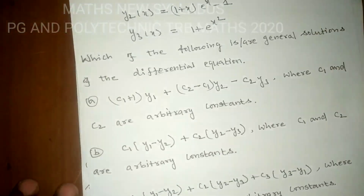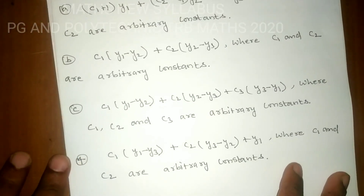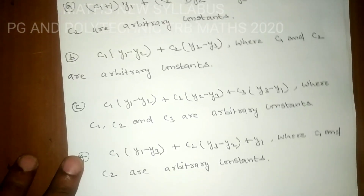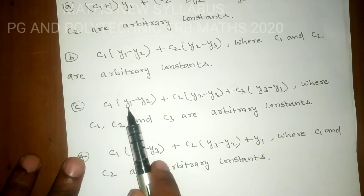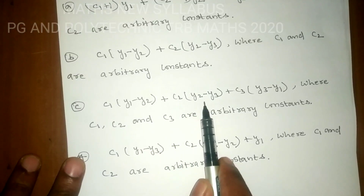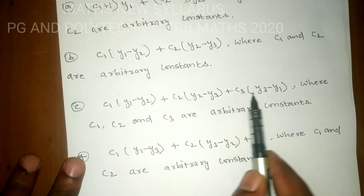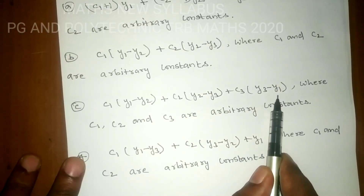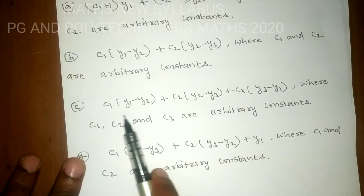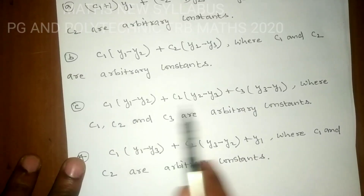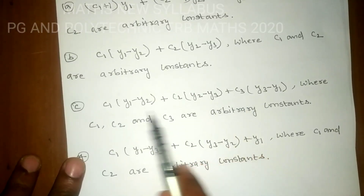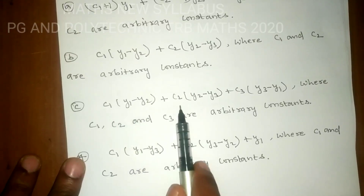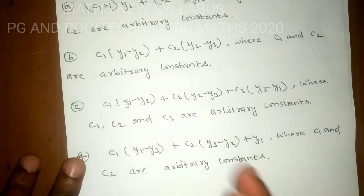Now, Option C is a linear combination: c1·(y1 − y2) + c2·(y2 − y3) + c3·(y3 − y1). This has three arbitrary constants: c1, c2, and c3. But the general solution of a second-order ODE can have at most two arbitrary constants.